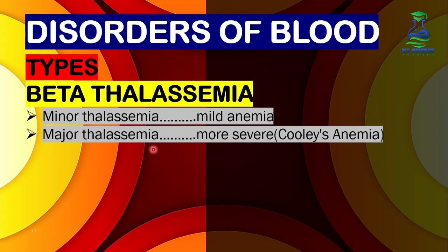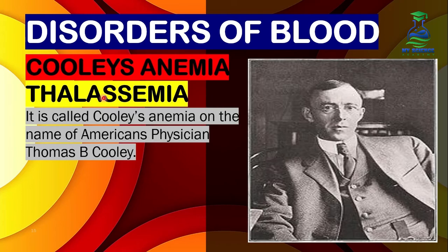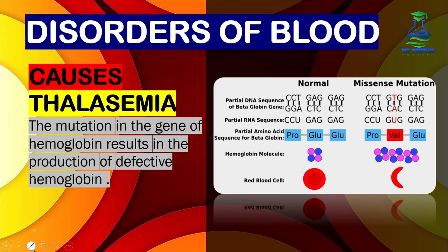In major thalassemia, the patient inherits two mutated genes from both parents, so the symptoms and signs are severe. It is called major thalassemia, also known as Cooley's anemia — named after American physician Dr. Thomas Benton-Cooley, who discovered this disorder.